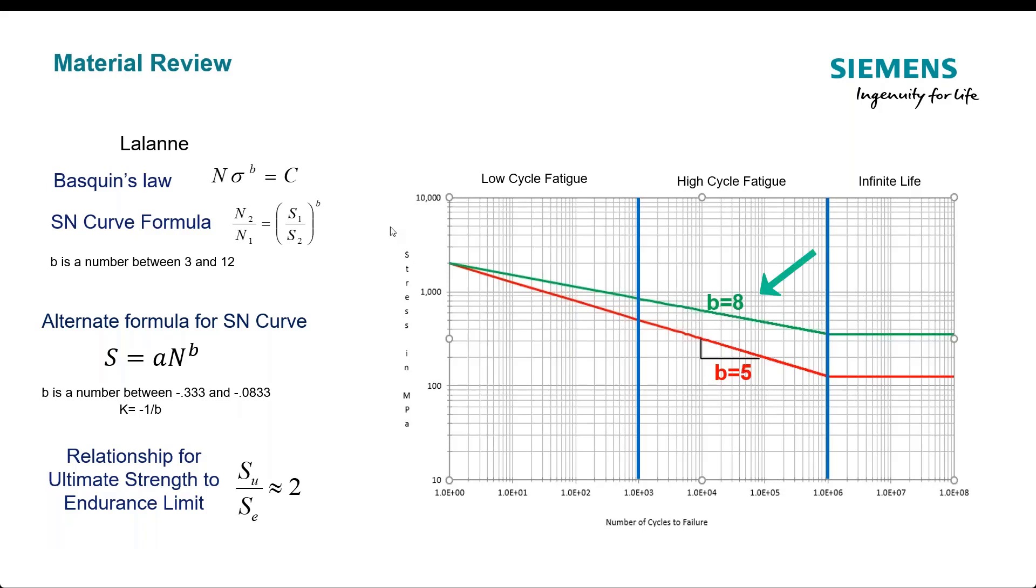So here I have a couple of b's, or in this formulation, it would be the k. And you see the run here. So the bigger this number is the flatter the line is. Here the steeper the slope is. So the steeper the slope, generally when we do accelerated testing, these lower b's are more conservative with this formulation.